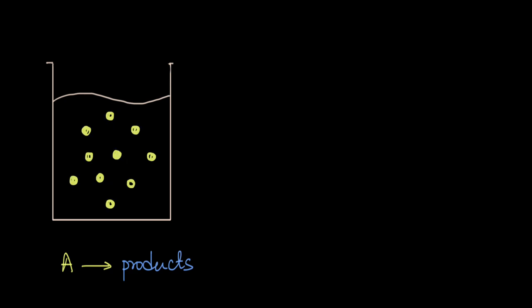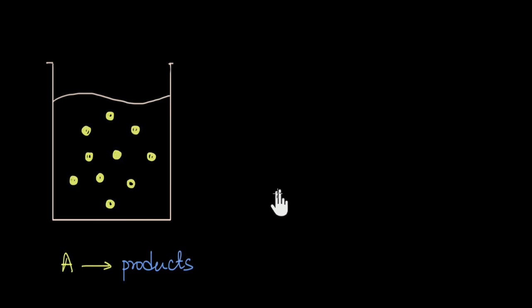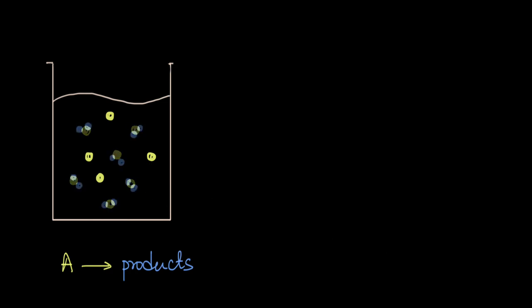This is because a typical chemical reaction happens due to collisions between reactant molecules. When reactant molecules collide, some old bonds get broken and new bonds get formed, leading to new products. Initially when the concentration of reactant molecules is high, wherever they move they will always encounter other reactant molecules, so they are bound to collide and form products.